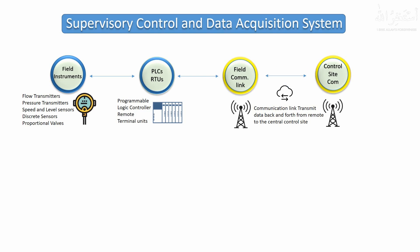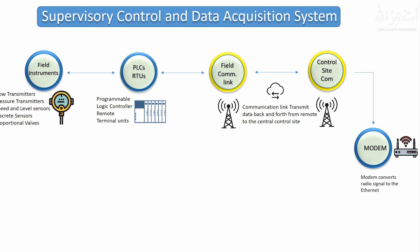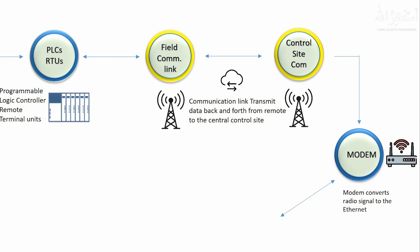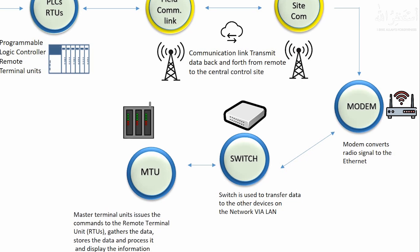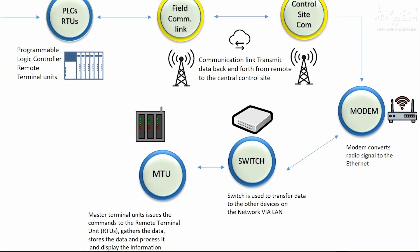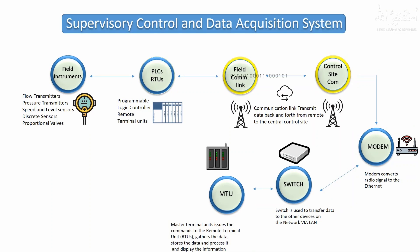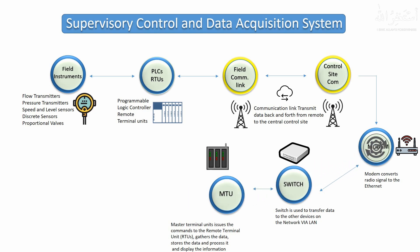Once the data is received at the central control site, it is converted to Ethernet using a modem. After that, the modem is connected to an Ethernet switch, which acts like a central LAN hub. This switch is connected to the MTU — Master Terminal Unit. The Master Terminal Unit receives data from the RTUs or PLCs, stores it, analyzes it, and sends control commands back to the RTUs to control the process at the remote location.